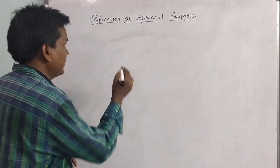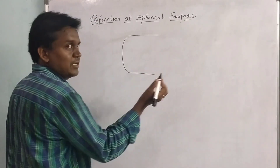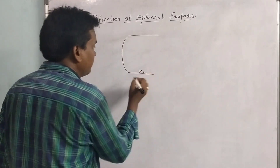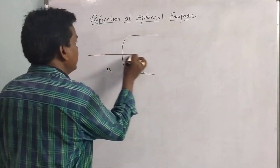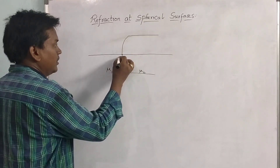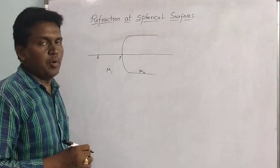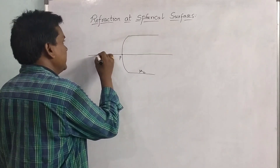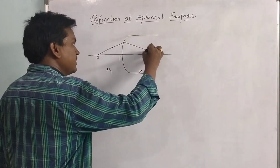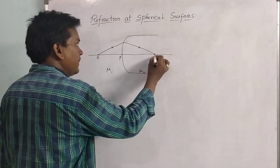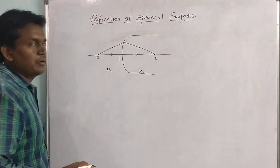Now let us consider a convex surface. This convex surface is separating two different media having a refractive index of mu2 on one side and mu1 on the other. Here is the principal axis, and this point is the pole or optical center. I am considering a point object on the principal axis. A ray passes from the object, refraction takes place at the spherical surface, and the image forms where two rays meet.